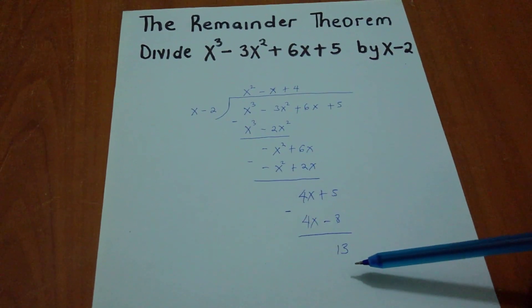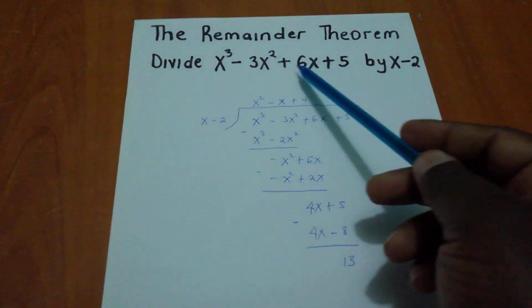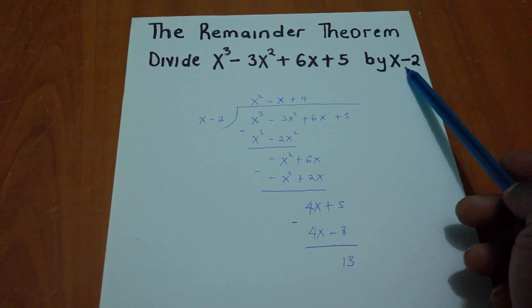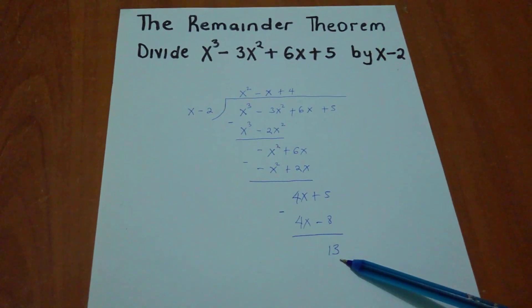And 5 - (-8) gives us positive 13. So we've got our answer and the remainder. This is the Remainder Theorem - when we divide this polynomial by the divisor, we get this quotient and remainder.